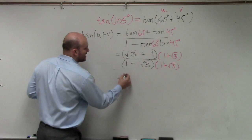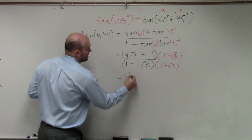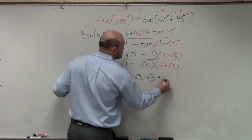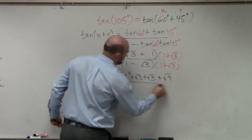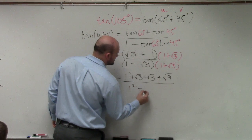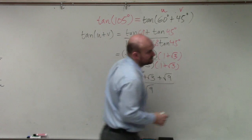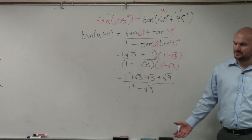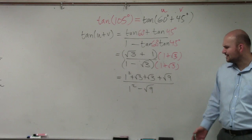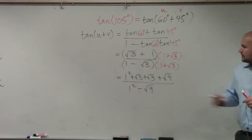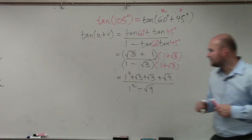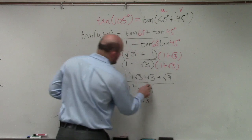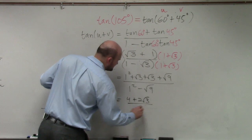So therefore, by applying this, I have 1 squared plus the square of 3 plus the square root of 3 plus square root of 9. I'll just multiply this one out for everybody. 1 squared minus the square root of 9. Because the middle terms are going to cancel out. So therefore, square root of 9 is going to be 3. 3 plus 1 is 4. So I have 4 plus 2, square root of 3. Square root of 9 is 3. 1 minus 3 is negative 2.